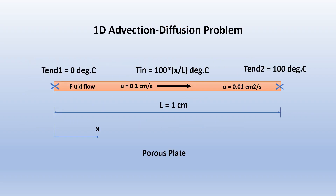Our problem is shown here in the figure. We have a porous plate with a fluid moving through it at a convection velocity of 0.1 centimeter per second. The length of the porous plate is 1 centimeter. Alpha, which is the thermal diffusivity of the fluid, is 0.01 centimeter squared per second. One end of the plate is maintained at 0 degrees Celsius and the other at 100 degrees Celsius. The initial temperature inside the plate is given as T_in equals 100 times x over L degrees Celsius, so the initial temperatures vary linearly with the length.